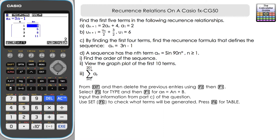Here are the terms in our sequence — looking at the first four: 2, 5, 8, and 11. We need to express these as a recurrence formula — how we get from one term to the next. Note A₁ = 2. Going from 2 to 5, then 5 to 8, we're adding 3 each time. So A_(n+1) = A_n + 3, with A₁ = 2.